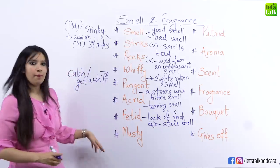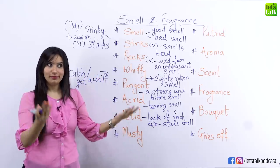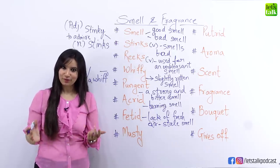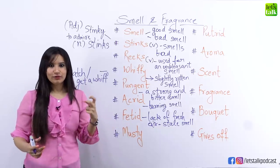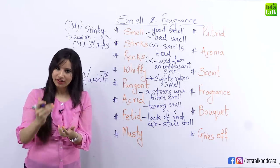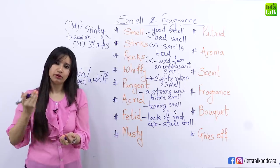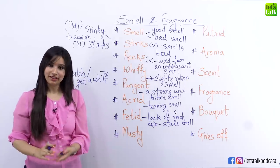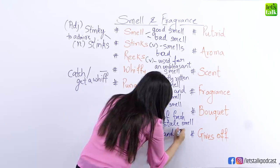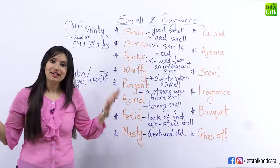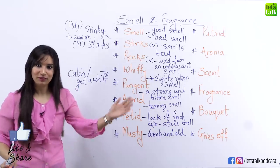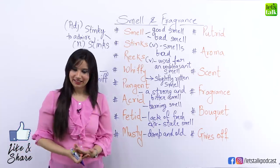The next one is a 'musty' smell. This is the kind of smell that you get in the library — for some people they love it, for some they don't. People who love reading books would love a musty smell. It's not actually a bad smell but it's the kind of smell you get from something which is damp — slightly wet and very, very old. Usually old papers, old books. So you could say I love the musty fragrance in the library, or I don't like the musty smell of books. You can use it positively and negatively both.